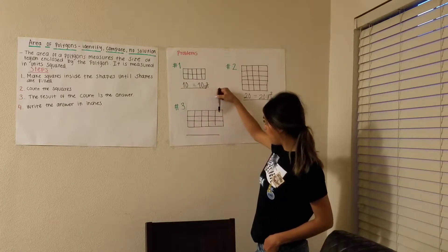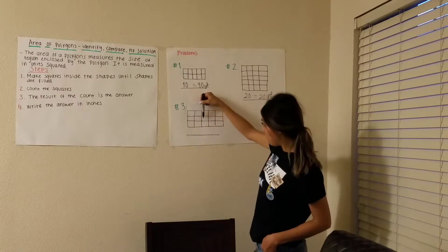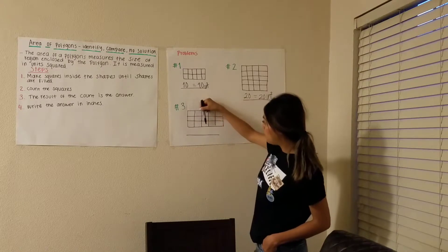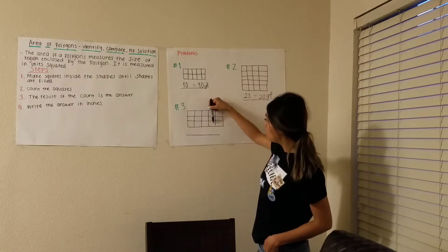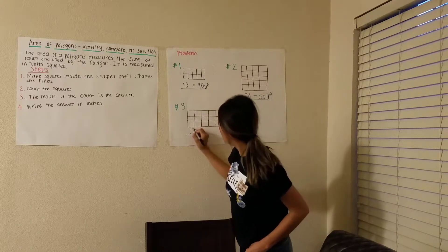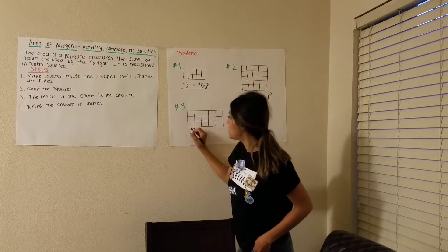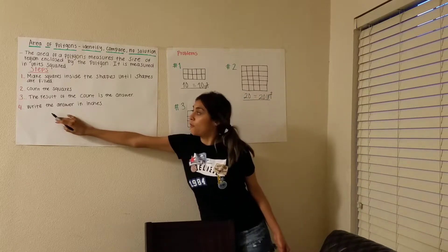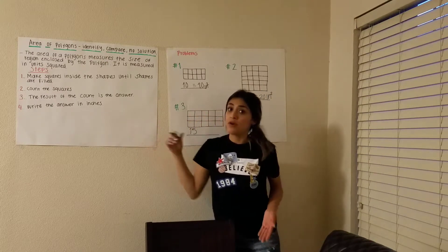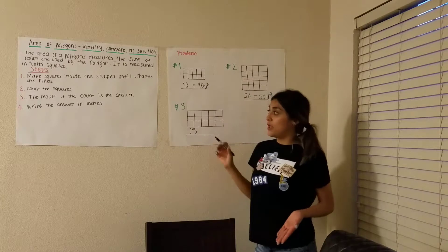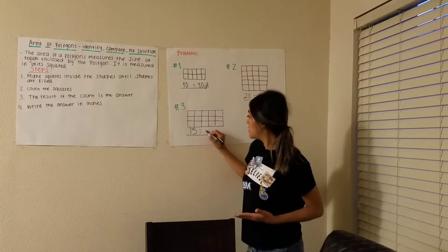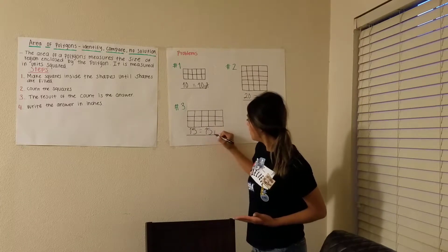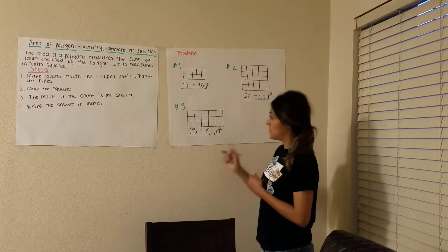One, two, three, four, five, six, seven, eight, nine, ten, eleven, twelve, thirteen, fourteen, fifteen. My answer is right here, but step four: we have to write our answer in inches. So it is 15 inches.